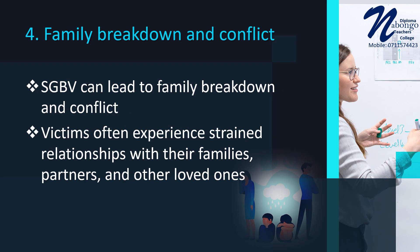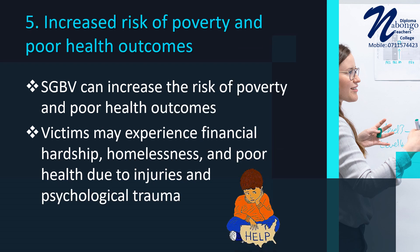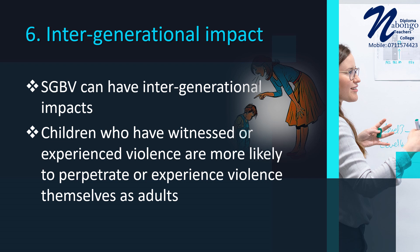Number 4 — Family Breakdown and Conflict: SGBV can lead to family breakdown and conflict, with victims often experiencing strained relationships with their families, partners, and other loved ones, further impacting their social and emotional development and limiting their support networks. Number 5 — Increased Risk of Poverty and Poor Health Outcomes: SGBV can increase the risk of poverty and poor health outcomes, with victims experiencing financial hardship, homelessness, and poor health due to injuries and psychological trauma. Number 6 — Intergenerational Impact: SGBV can have intergenerational impacts, with children who have witnessed or experienced violence being more likely to perpetrate or experience violence themselves as adults.